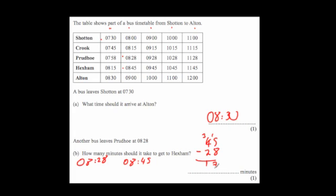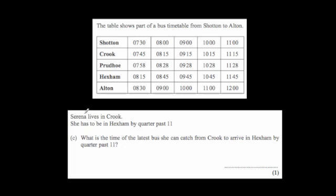That gives us 17 minutes, so the answer is 17 minutes. Finally, Serena lives in Crook and needs to be in Hexham by quarter past 11. She can catch five buses from Crook: at 7:45, 8:15, 9:15, 10:15, and 11:15. Those buses arrive in Hexham at 8:15, 8:45, 9:45, 10:45, and 11:45 respectively.